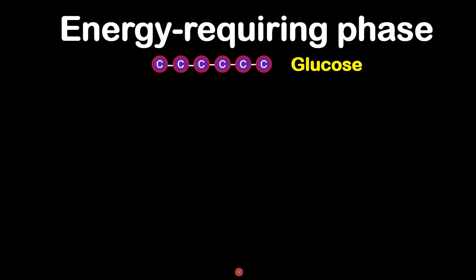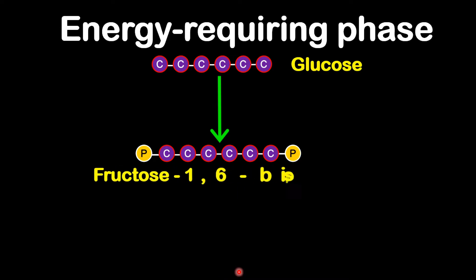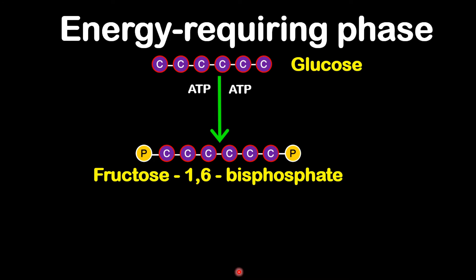Let's go into the energy-requiring phase first. In this phase, the glucose molecule will be converted into another six-carbon molecule called fructose-1,6-bisphosphate. This process requires energy, so ATP is required — specifically, two ATP molecules are required.